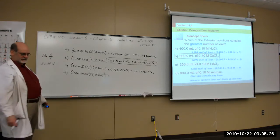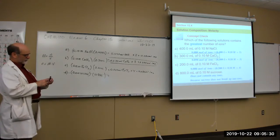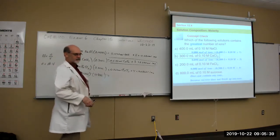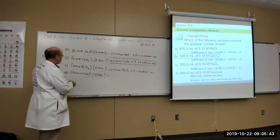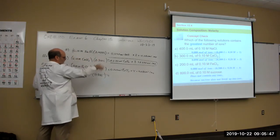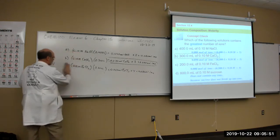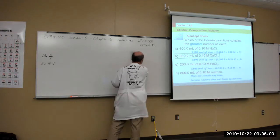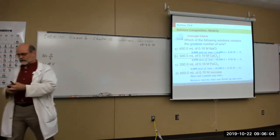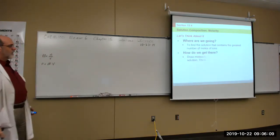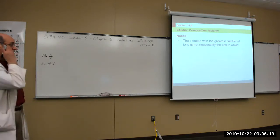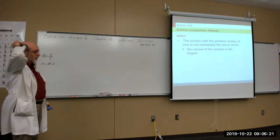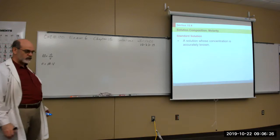The solution with the greatest number of ions is not necessarily the most concentrated or the largest volume — you have to do the calculations to find out. The assembly-line approach works well: once you get the first calculation right and apply the same progression to each, you're less likely to make mistakes.